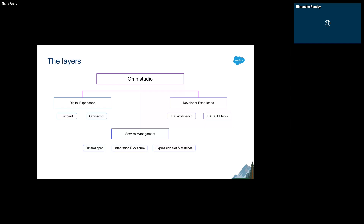Coming to the Service Management layer — this is our backend layer. It provides tools to perform ETL operations: Extract, Transform, and Load. All three can be done by the Data Mapper itself. Data Mapper used to be called Data Raptor — it's been rebranded — so you might still find references online to Data Raptor. Then we have Integration Procedure, which can be used to perform logic on the data that you have.